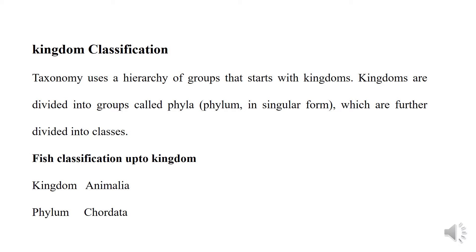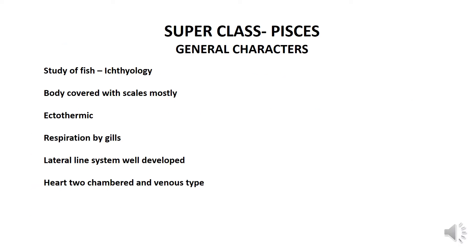Phylum classification is the level of classification or taxonomic rank below the kingdom and above the class. Fish belong to kingdom Animalia and phylum Chordata. The superclass is Pisces. The word Pisces is derived from the Greek word meaning truly jawed fishes. The study of fishes is called Ichthyology.